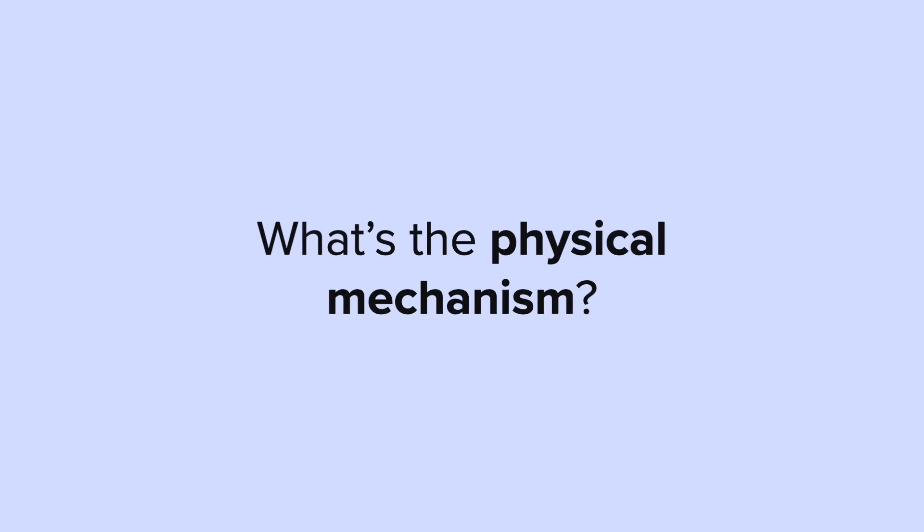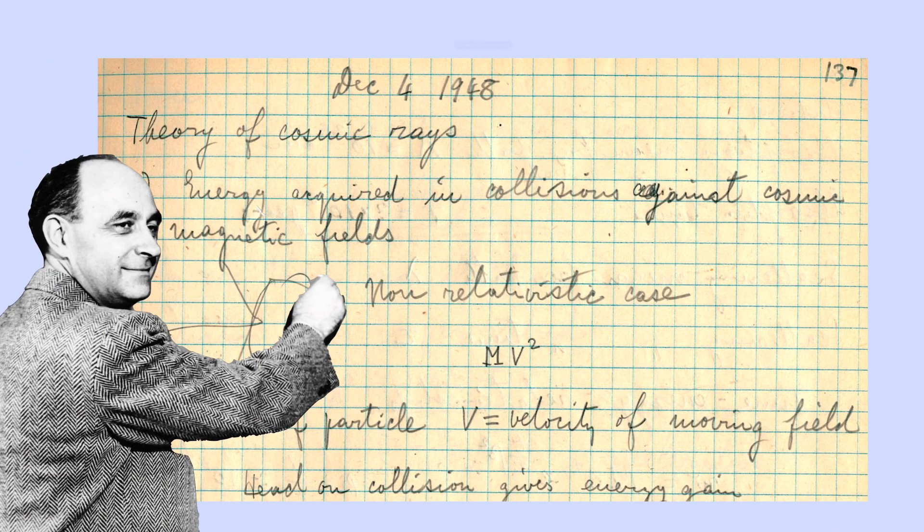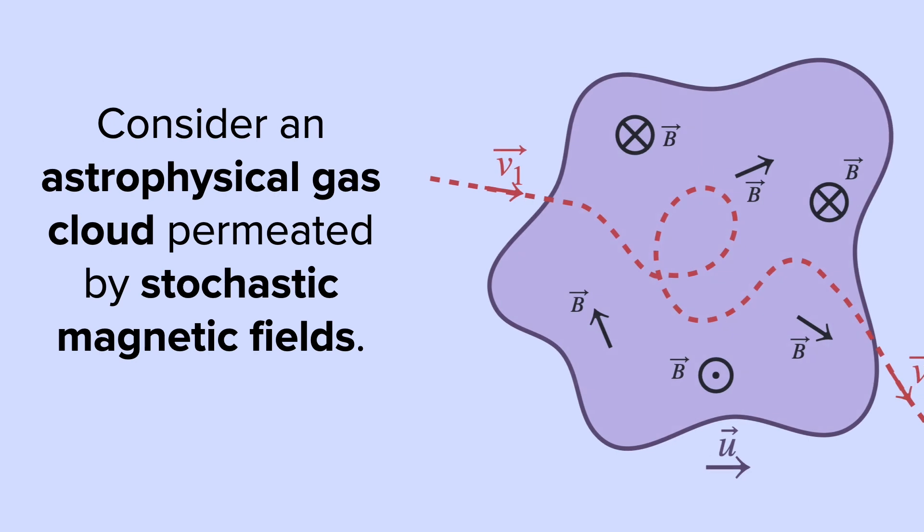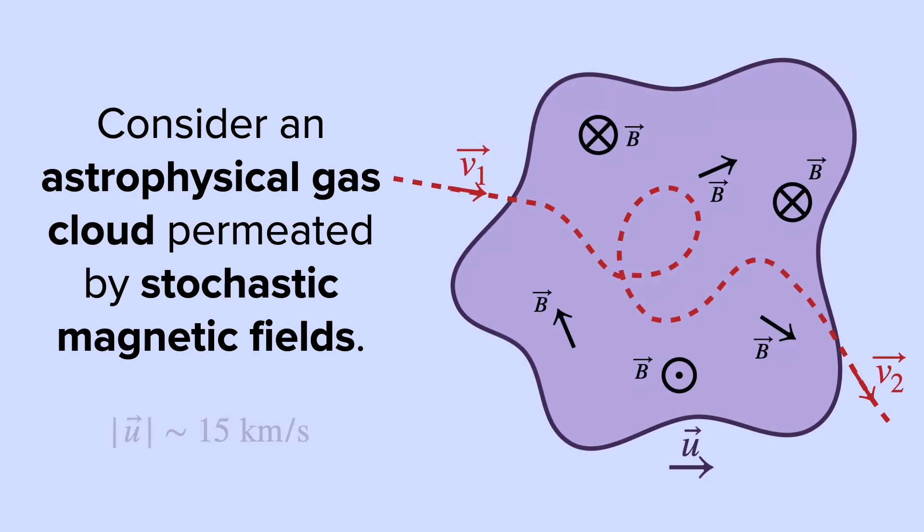What is the physical mechanism of these cosmic ray accelerations? In 1948, Enrico Fermi came up with a theory to explain cosmic ray acceleration. Let's consider an astrophysical gas cloud permeated by stochastic magnetic fields, meaning that at any point of this moving cloud, the magnetic field can be in any direction. And we'd like to think about the scenario where a moving particle comes in with some velocity and exits the cloud with another.